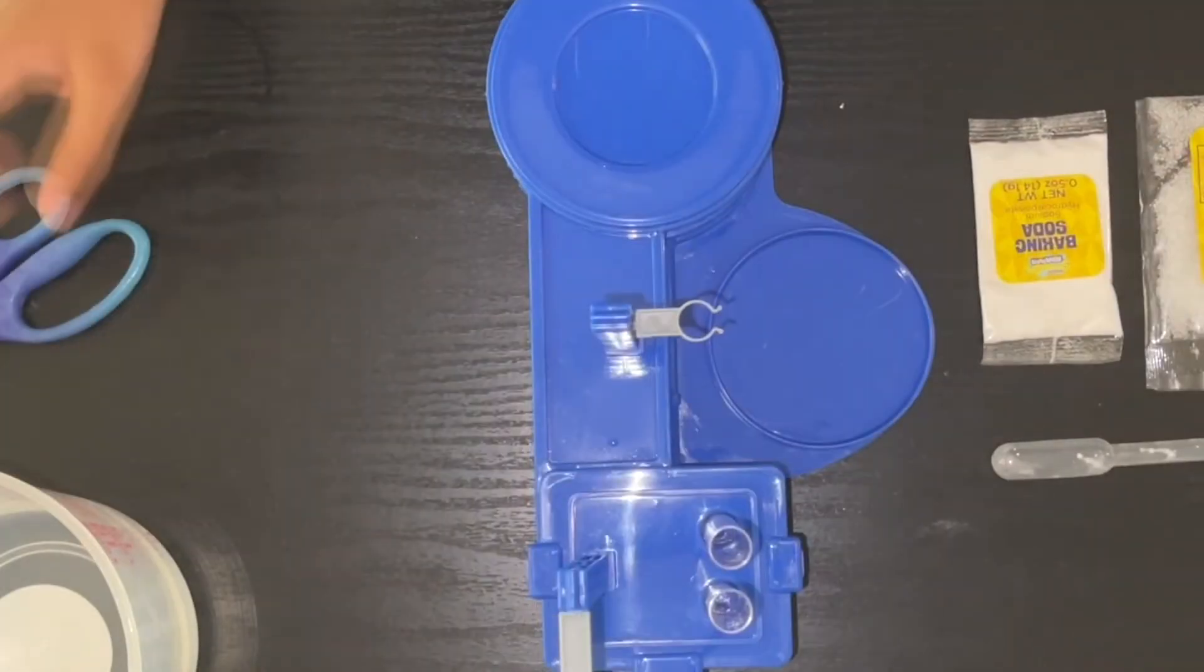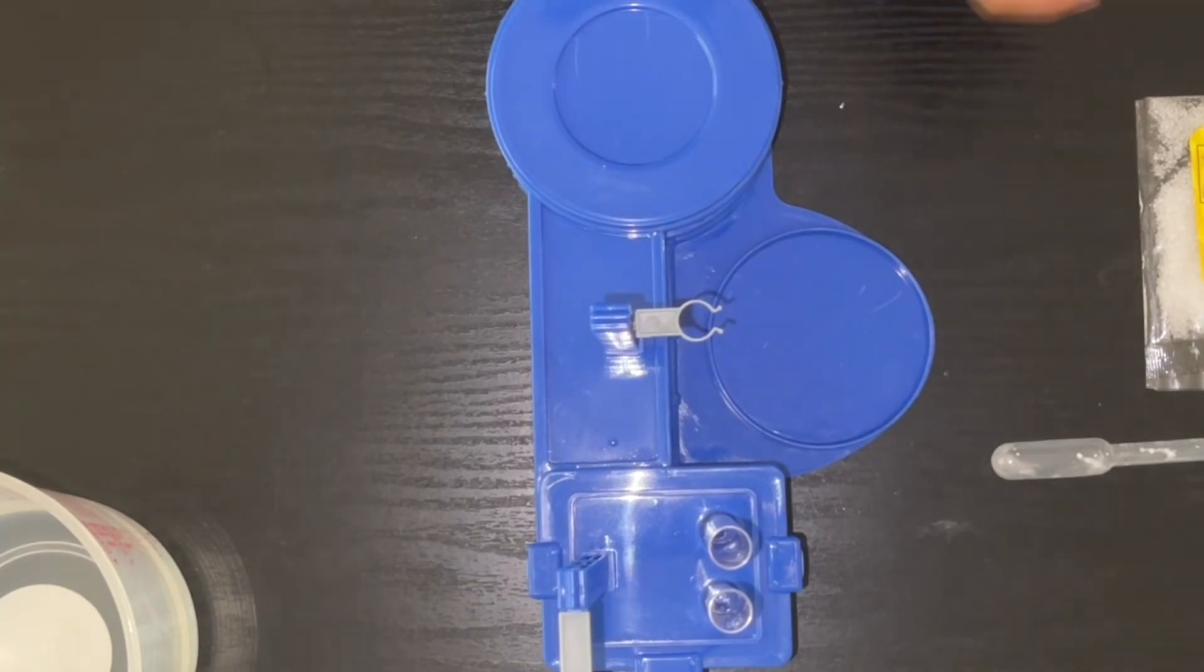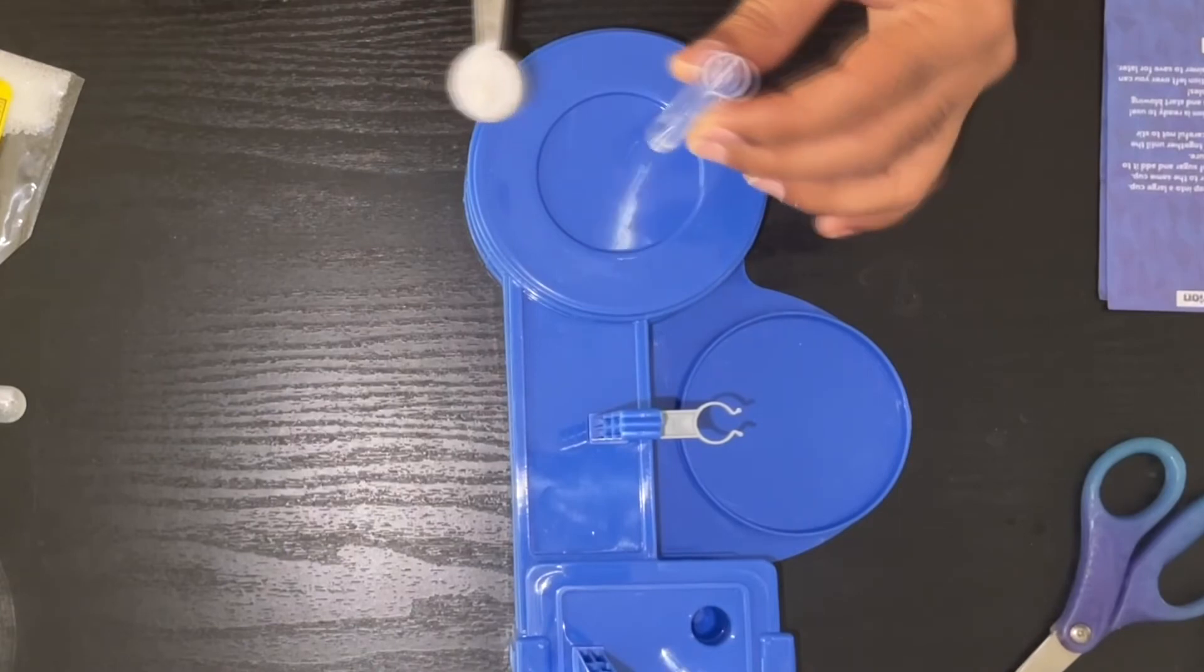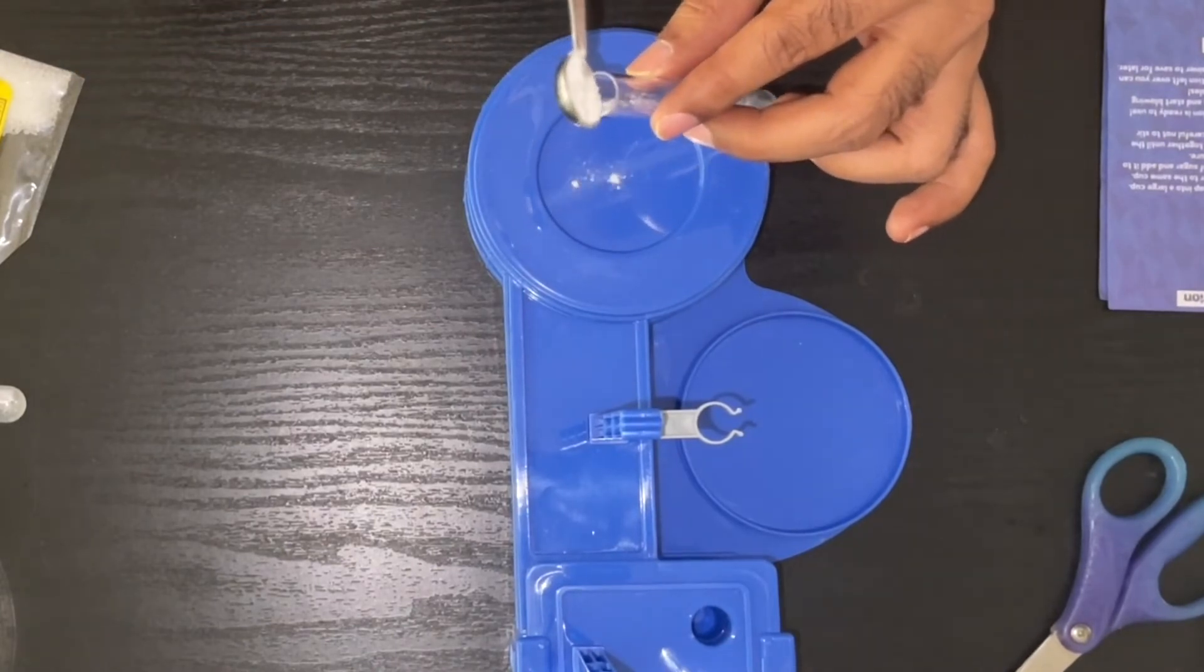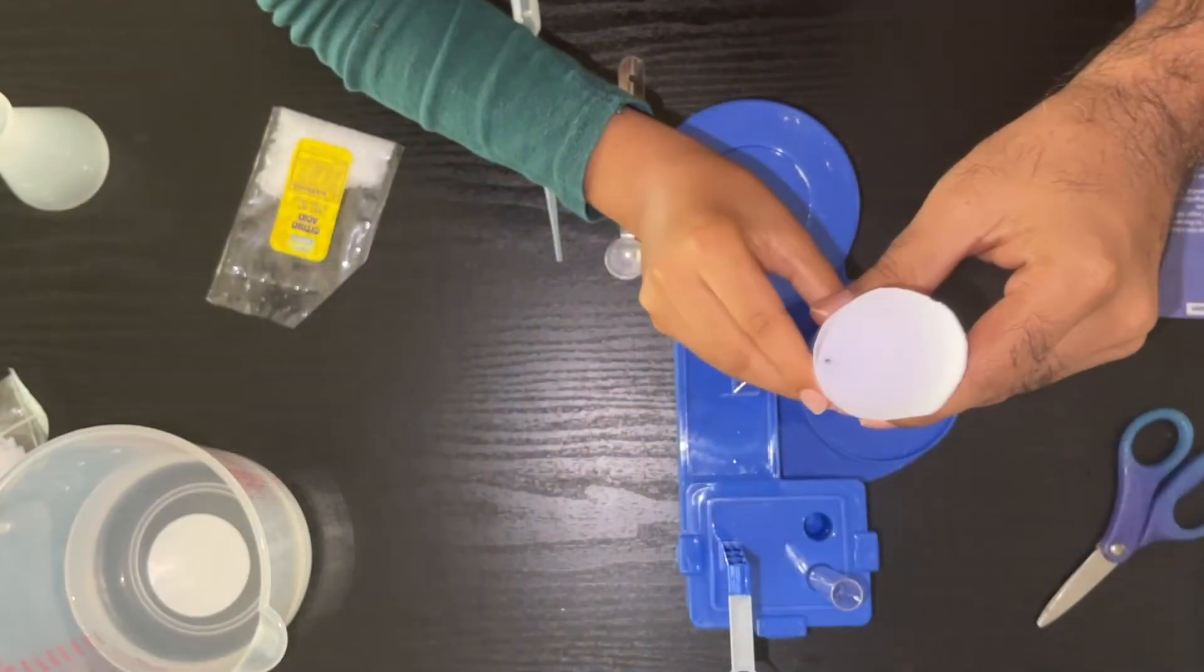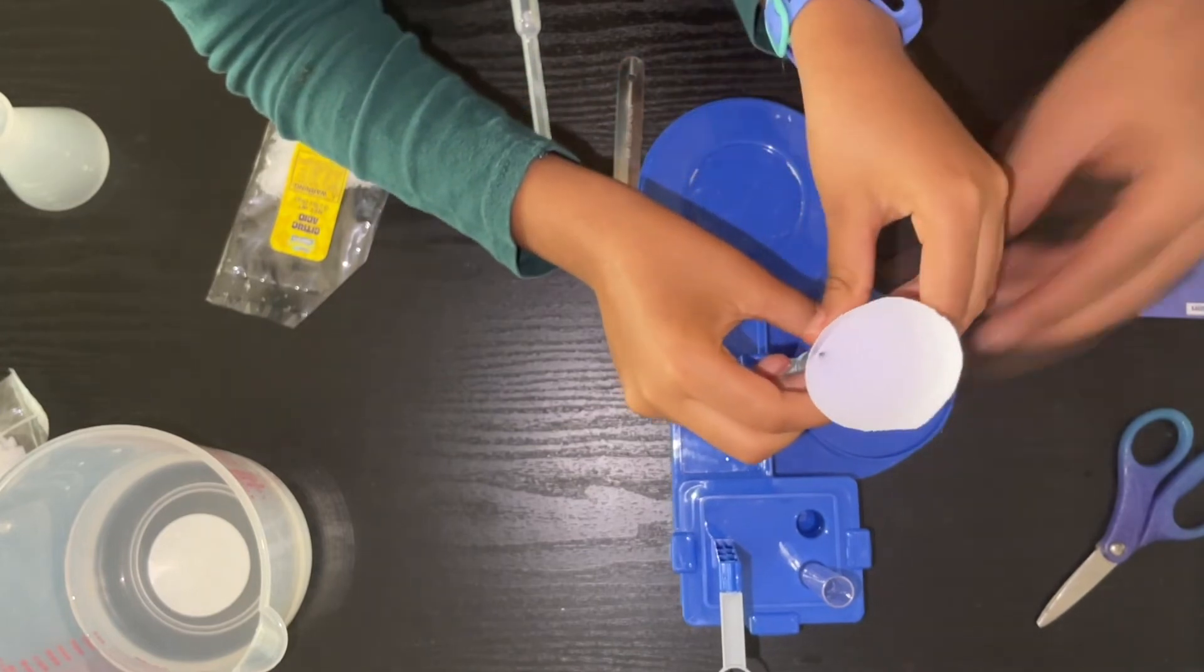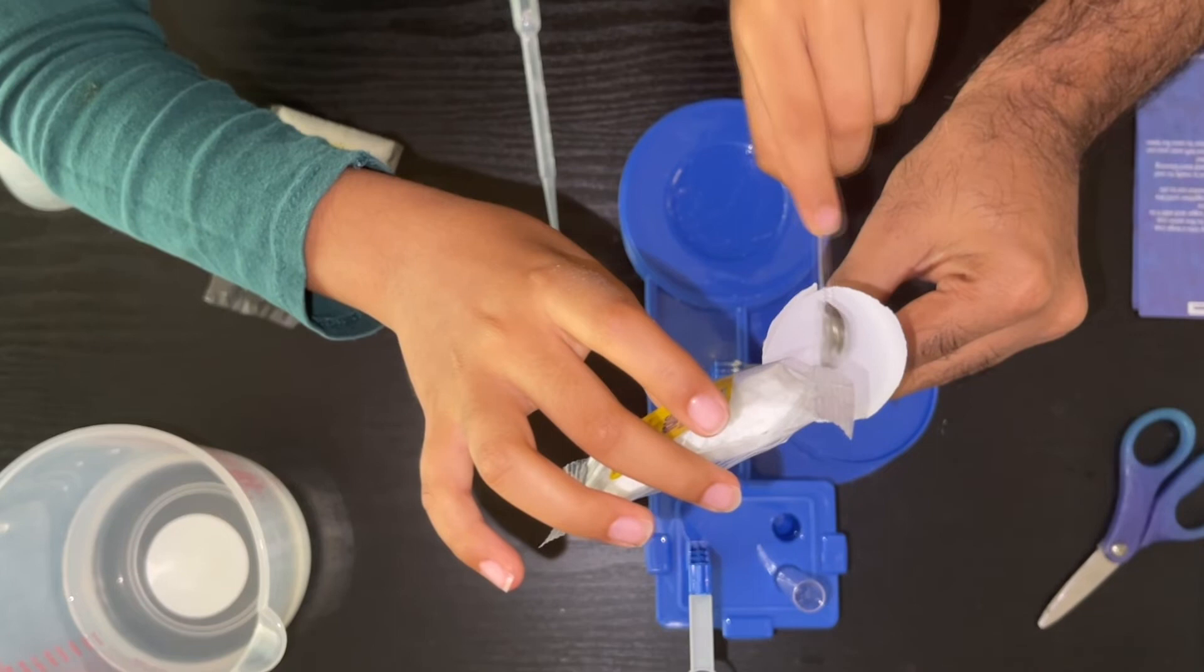We need to mix one spoonful of baking soda and one spoonful of citric acid in a clean, dry test tube. It's pretty tricky because the test tube has a small mouth, so my dad's doing this part. Manusha, make this paper funnel so it will be easier to put the powder there.